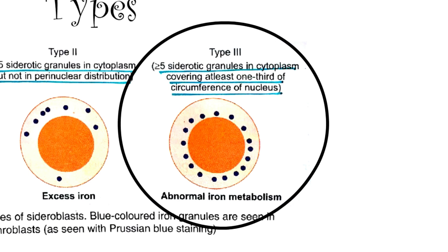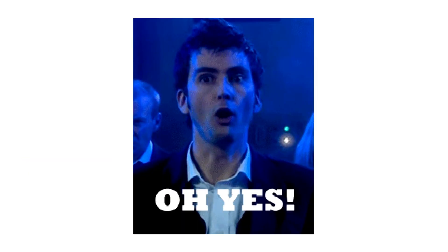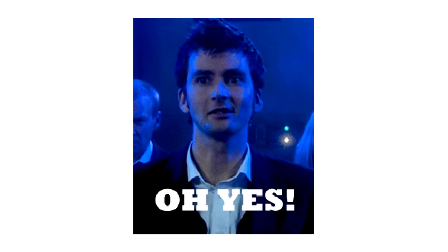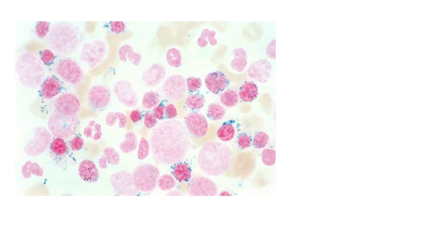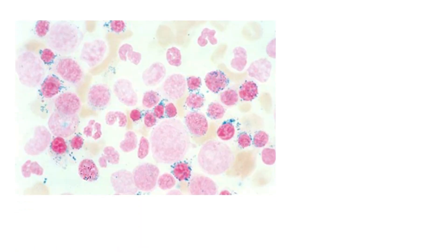So the essential criteria to call it a ring sideroblast are: 5 or more granules in the perinuclear region encircling at least one third of the nucleus. It is now obvious that ring sideroblast is a type of sideroblast. Now let's have a look at some amazing microphotographs of ring sideroblasts.